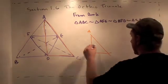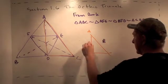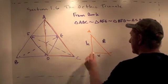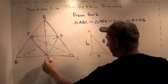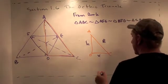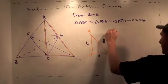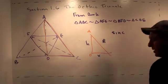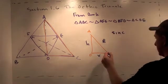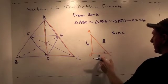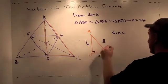So AC has length B, this has length H, and then CD, which is the length of the side of the triangle that we're looking for. Notice it's sine C equals X over B, because this is the right angle.